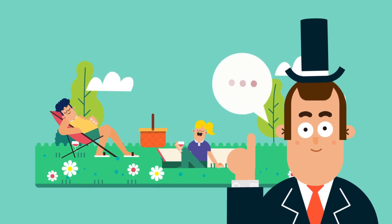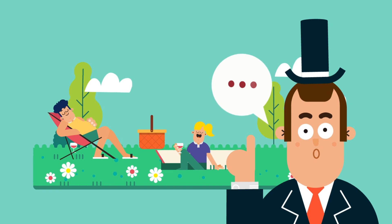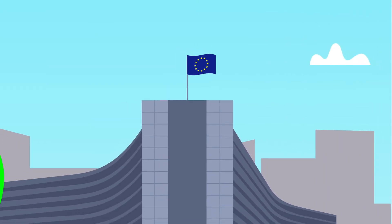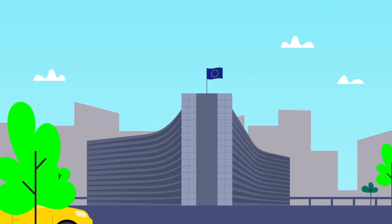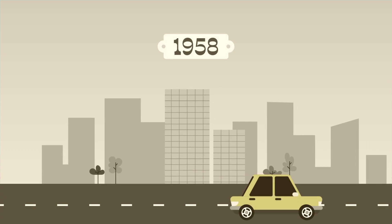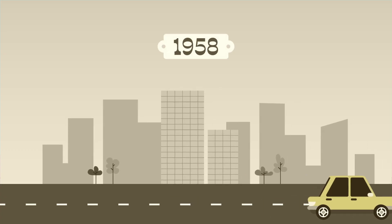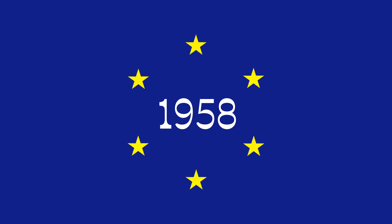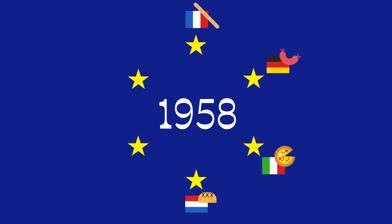Yes, things are sometimes counterintuitive. Let's have a look at the EU voting system for example. In 1958, the European community only had six member states: France, Germany, Italy, Netherlands, Belgium and Luxembourg.